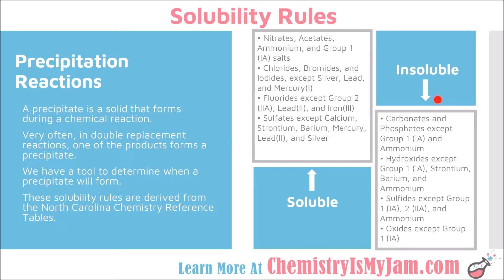Here is one version of the solubility rules. This is a list of ions that tend to be soluble. For example, chlorides, bromides, and iodides tend to be soluble unless they are paired with silver, lead, or mercury. This is a list of ions that tend to be insoluble, meaning they would form a solid. Some ions are soluble and dissolve in water, while others tend to form a solid — a precipitate would form.